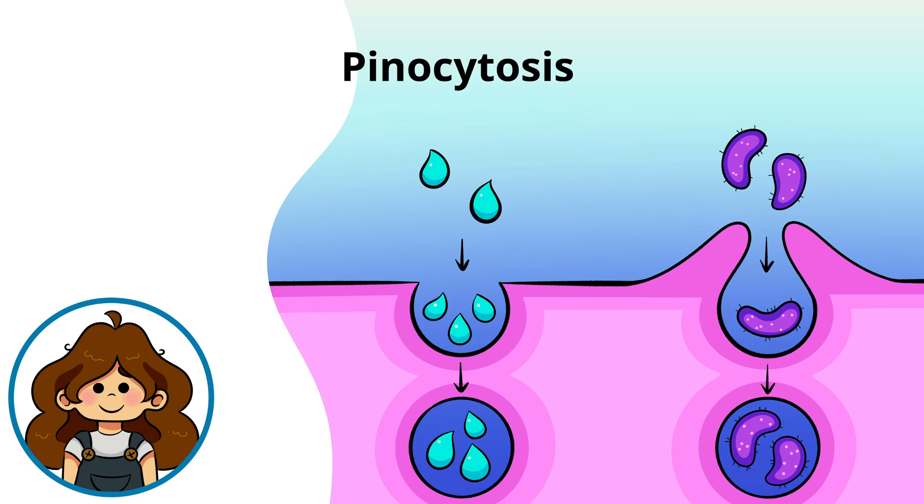Endocytosis has two main forms: pinocytosis, which brings in liquids and dissolved nutrients, and phagocytosis, which is when the cell engulfs large particles like bacteria.